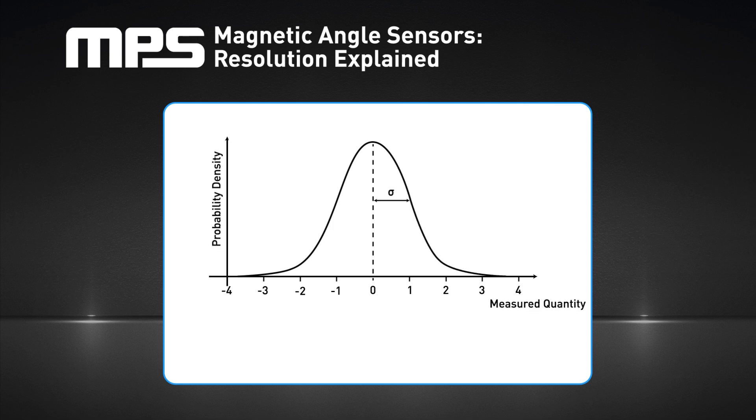In statistics, the standard deviation measures the dispersion of a set of samples around their average. The higher the dispersion, the higher the standard deviation. This parameter is also referred to as the root mean square, or RMS, noise.